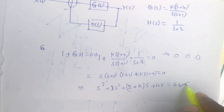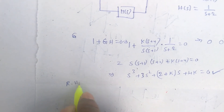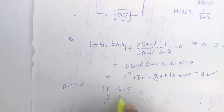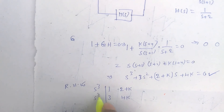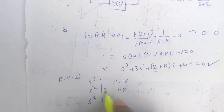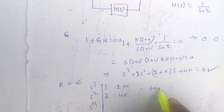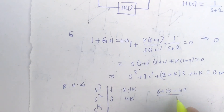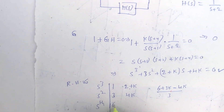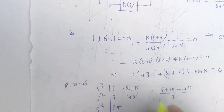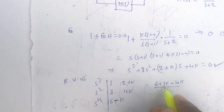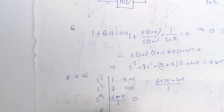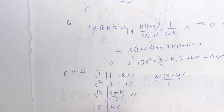Applying the Routh-Hurwitz criteria, the array is constructed as follows. The s³ row: 1, (2+k). The s² row: 3, 4k. The s¹ row element is [3(2+k) − 1·4k] / 3 = (6 + 3k − 4k) / 3 = (6 − k) / 3. The s⁰ row (constant row) is 4k.